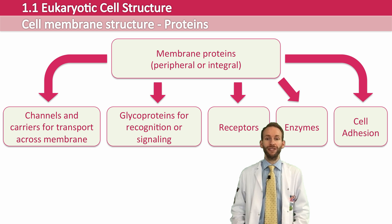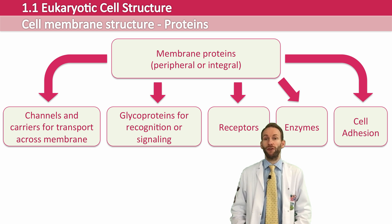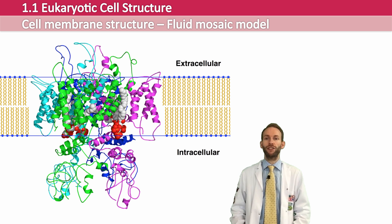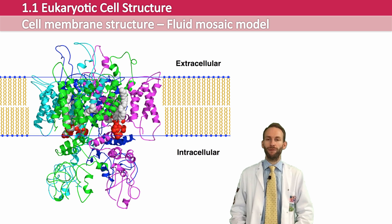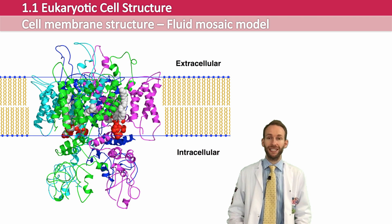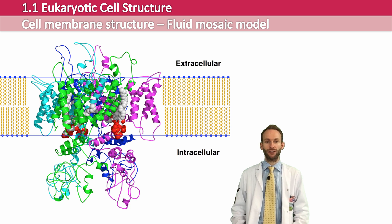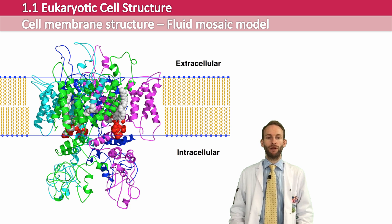These proteins are dotted amongst the phospholipids — they're not bonded to them, just interspersed throughout the membrane. The cell can add more proteins in or take proteins out. We call this the fluid mosaic model.